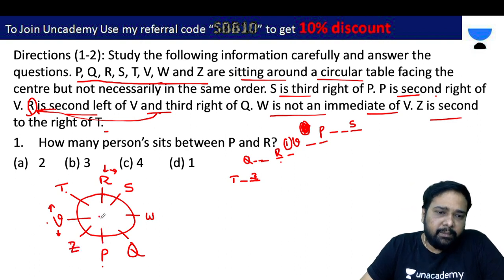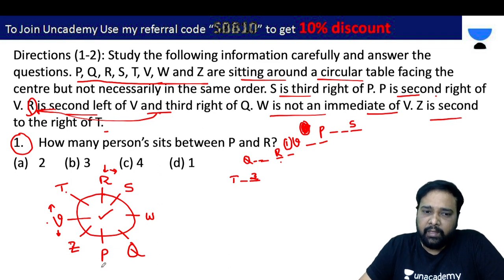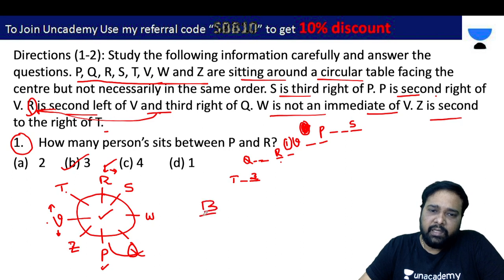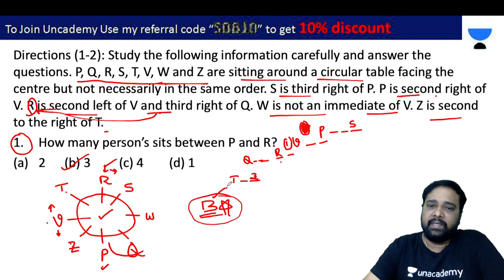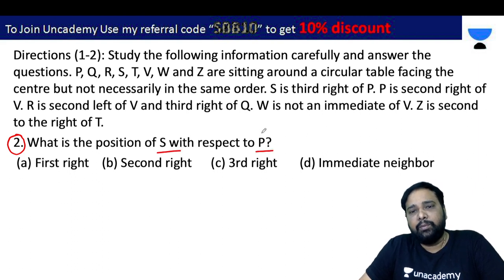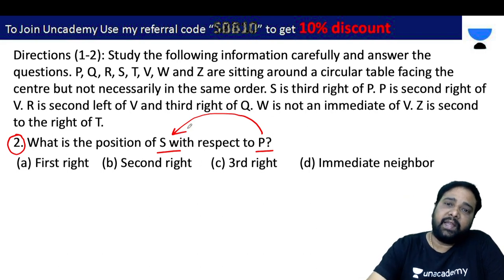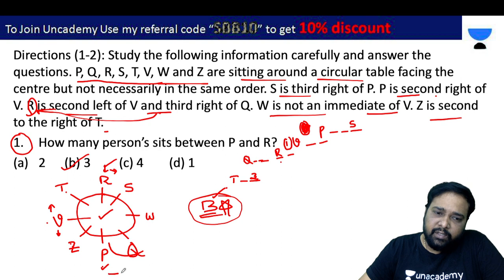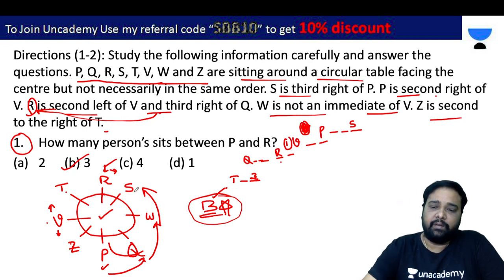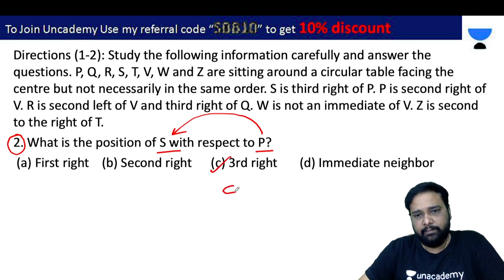Question: How many persons are sitting between P and R? The 2nd position is the same. What is the position of S with respect to P? From P — 1st right, 2nd right, 3rd right. The answer is C: S is 3rd right of P.